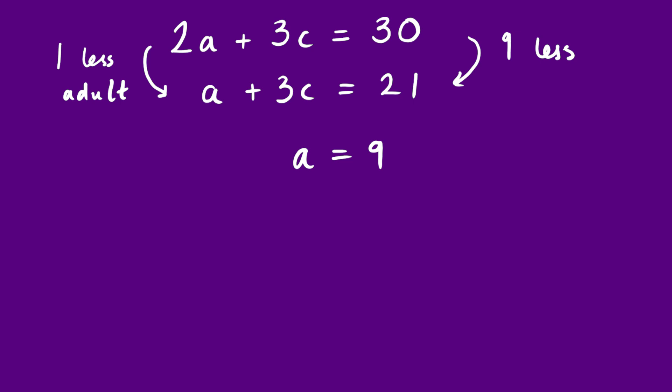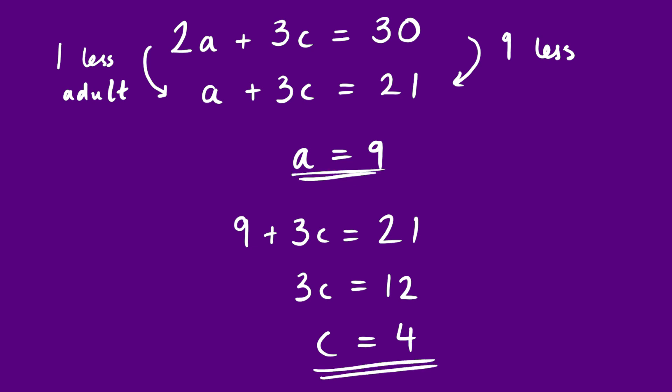Once we know the adult ticket is £9, two adults would be £18. That means those three children must be £12 between them, or £4 each. We could verify using the second example: one adult is £9, so three children must also be £12, which is £4 each. Whichever way you do it, you should get the same answer.